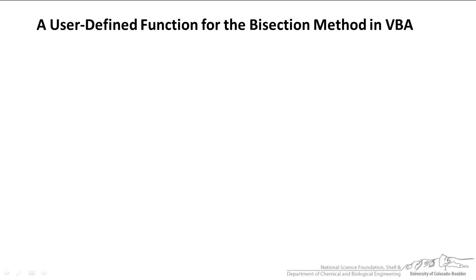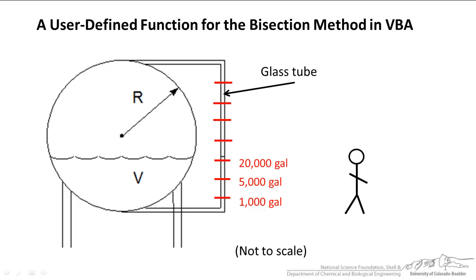In this screencast I'm going to show you how to use the bisection method in VBA to solve complicated equations involving one variable. This spherical tank is a metallic tank and we want to know the volume as a function of fluid height in this glass tube.